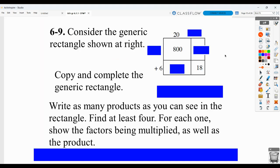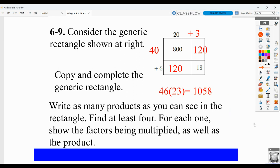Here they want you to complete this generic rectangle. So we would ask ourselves, what do we multiply by 20 to give us 800? And that would be 40. So 40 must be part of this factor. And then what would we multiply 6 by to give us 18? 3. So this must be part of that factor. Then 40 times 3 gives us the 120. 6 times 20 gives us also 120. And then we would need to show we had 46 times 23, which equaled 800 plus 120 plus 120 plus 18, which is this.